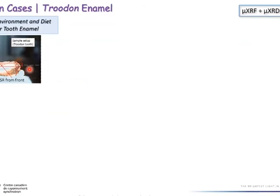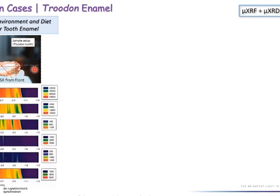Another sample is a Troodon dinosaur tooth enamel from Alberta Dinosaur Provincial Park, provided by the Royal Tyrrell Museum in Drumheller, Alberta. We performed fluorescence mapping of the dashed box region, which shows some kind of orientation of the structural features. Within the enamel, there is a small amount of copper and zinc, which likely entered during fossilization or mineralization from the surrounding environment through the tooth structure.